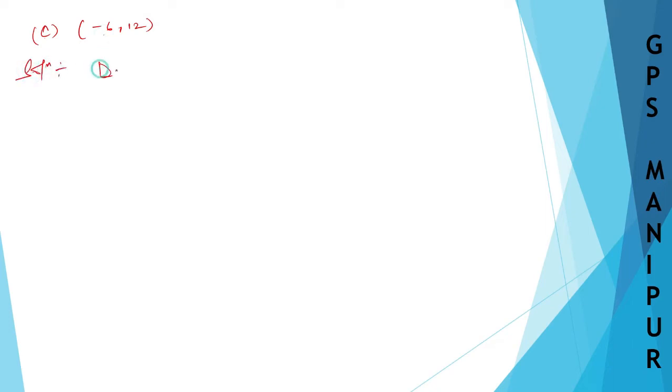Distance of (-6, 12) from origin is equal to root over... so there is a formula: x squared plus y squared.